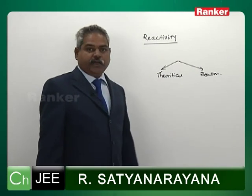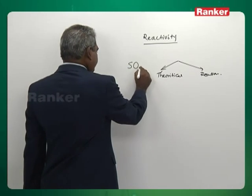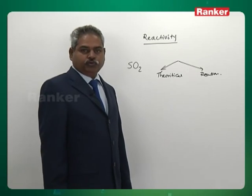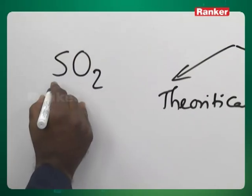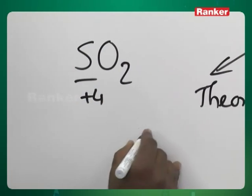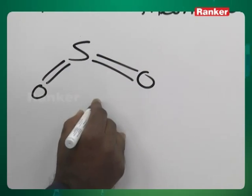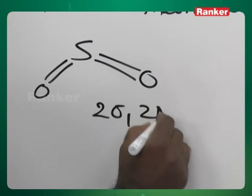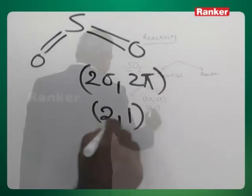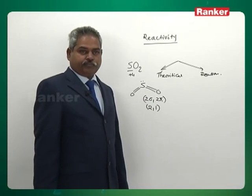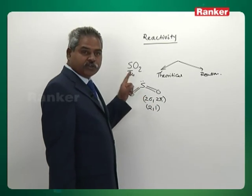What do you mean by theoretical questions? For instance, in our earlier classes, we have discussed SO2 — so many things about SO2 we discussed. To start with, the oxidation state: sulfur is plus 4, and the structure has a double bond O, double bond O. It has two sigma bonds and two pi bonds, and sulfur has a lone pair — two bond pairs and one lone pair. Therefore, it has a bent structure. The geometry, the sigma bonds, the pi bonds, lone pair, oxidation state.